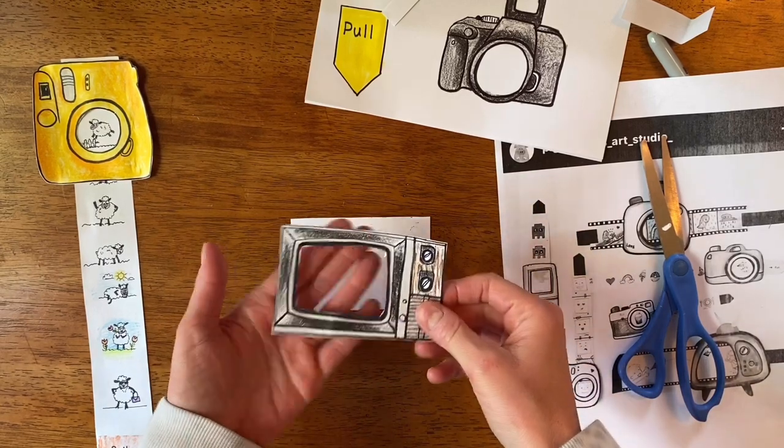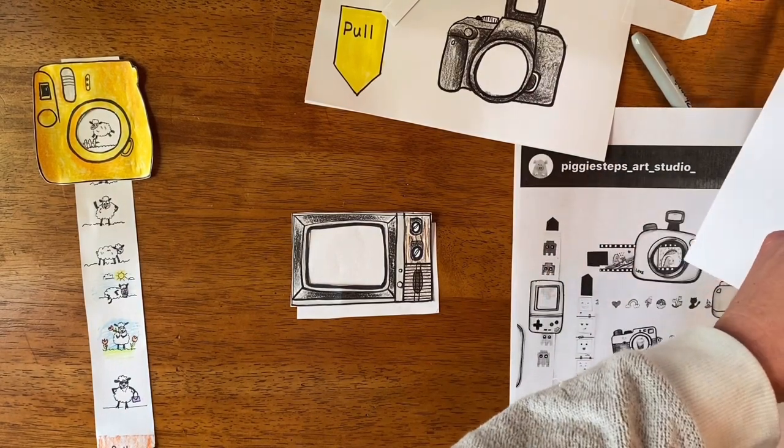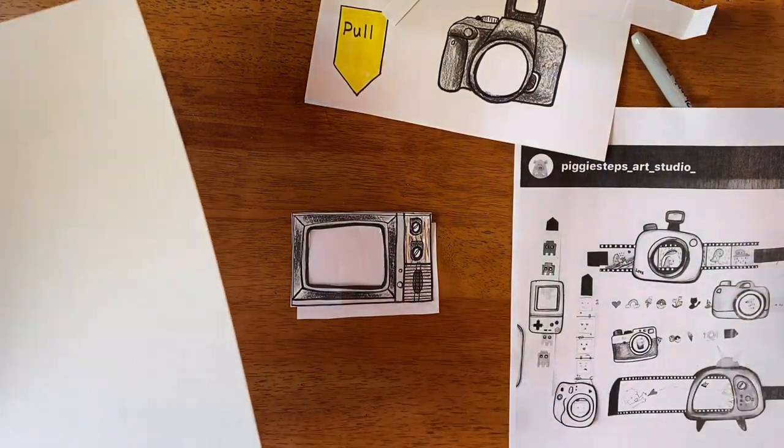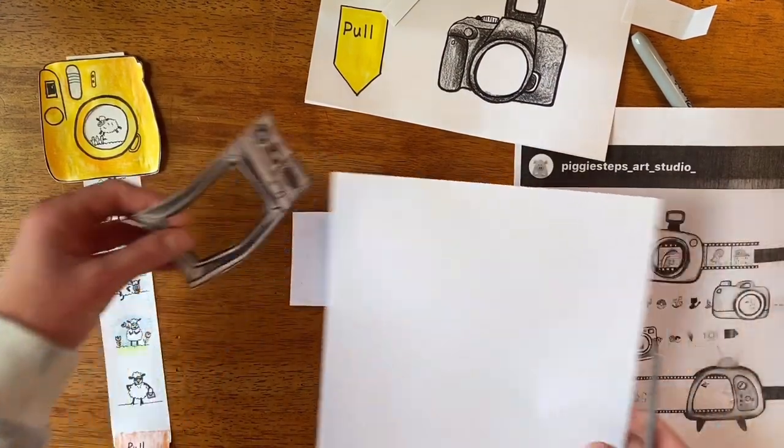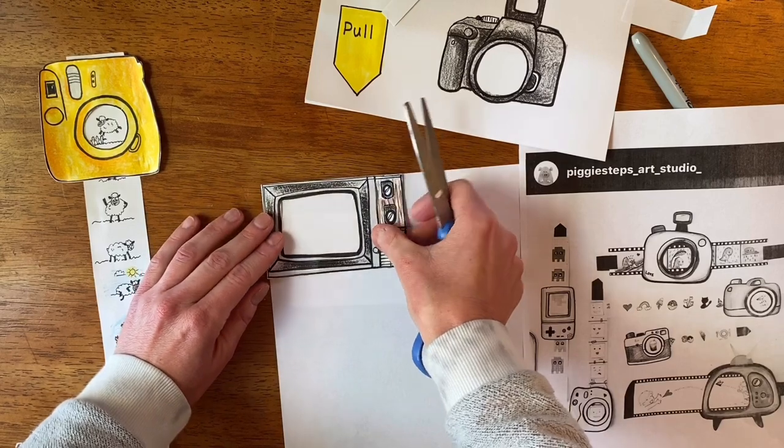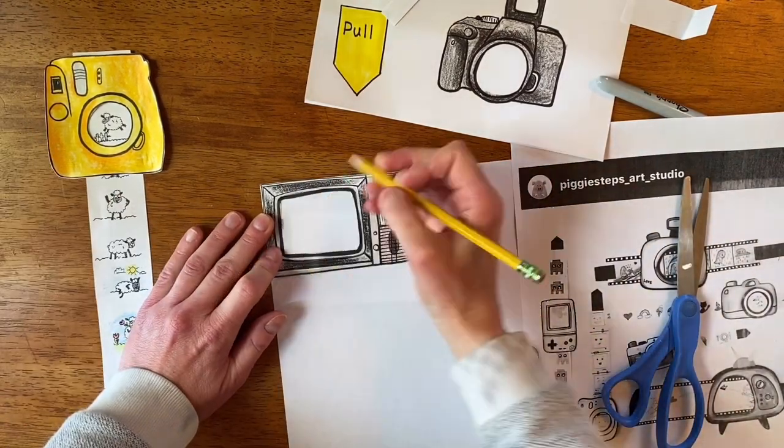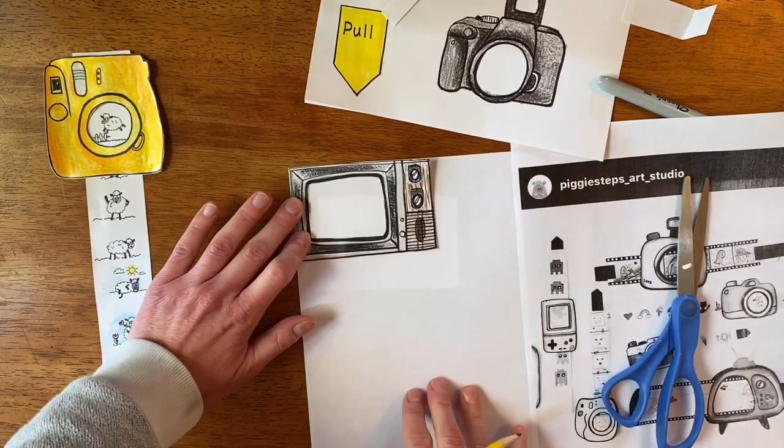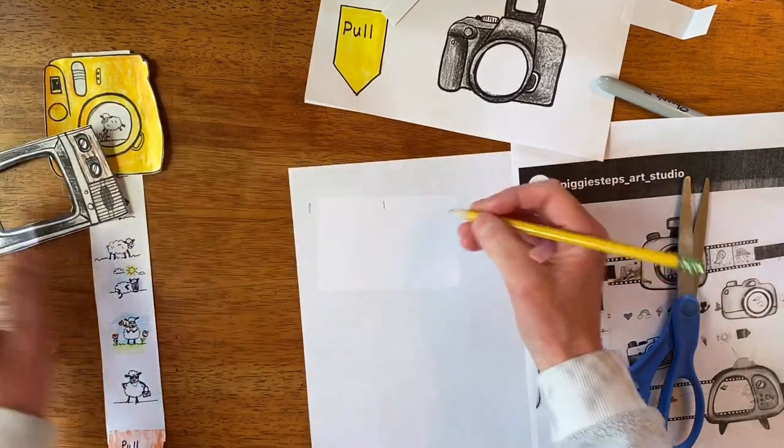Once we cut out the center of your camera or your TV or whatever you're going to make, and we have our front and back pieces with the middle cut out, we're going to take a separate piece of paper and we're going to make the paper strip that goes through. What we're going to do is put this on top and I'm going to take a pencil and I'm just going to mark both sides so I know how wide to cut my strip to go through.